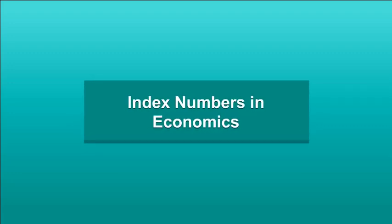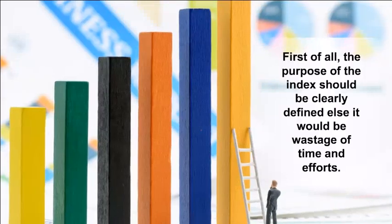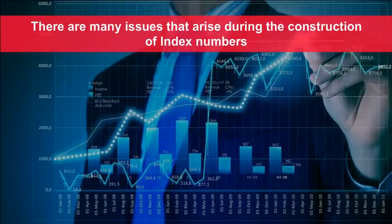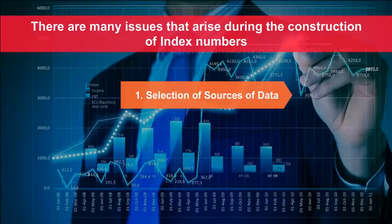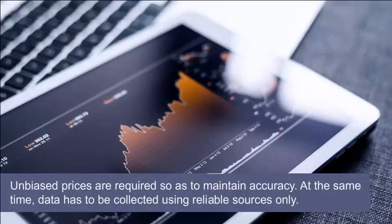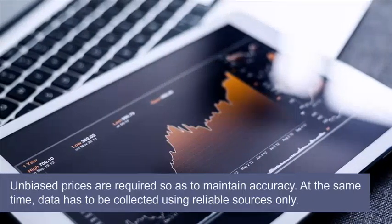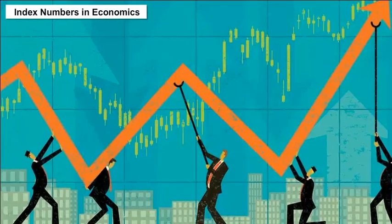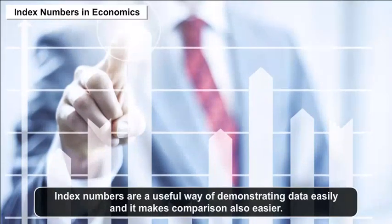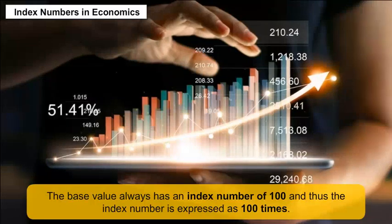Index Numbers in Economics — Issues in Construction: First of all, the purpose of the index should be clearly defined, else it would be a wastage of time and effort. There are many issues that arise during the construction of index numbers — for example, selection of sources of data, determining the base year, and the selection of a number of items. Unbiased prices are required so as to maintain accuracy, and data has to be collected using reliable sources only.